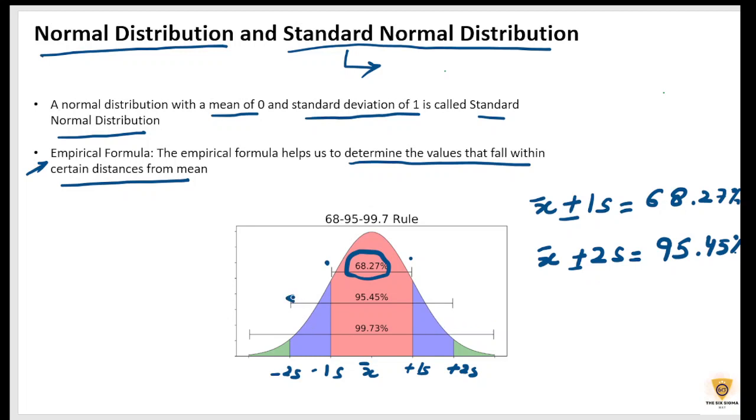So this is minus 3s and this is plus 3s. X-bar plus minus three times the standard deviation will contain 99.73% of values. This is again important, and we'll discuss this in the future as well.